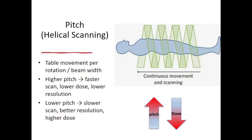Next is pitch, which is used in helical scanning mode. Pitch determines how fast the CT table moves relative to the x-ray beam. A higher pitch speeds up the scan and lowers radiation dose, but reduces image quality, requiring more interpolation for reconstruction. Conversely, a lower pitch provides better detail but increases dose. A pitch of 1 is equivalent to axial scan mode, ensuring full data sampling without gaps or excessive overlap.